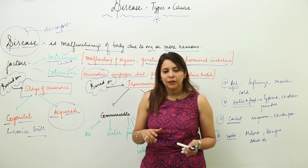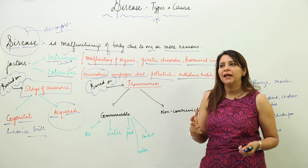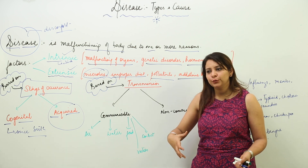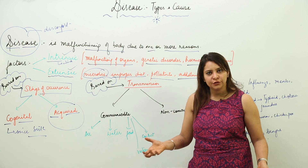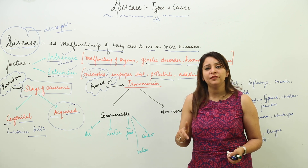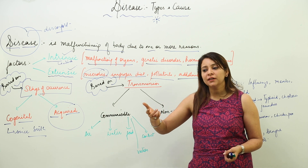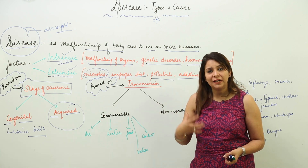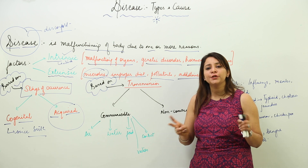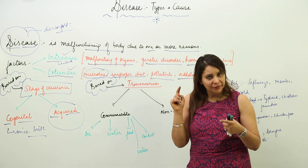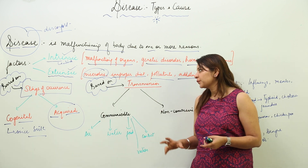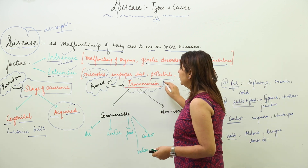Acquired disease is one that you acquire during your lifespan. For example, a person who is daily exposed to a lot of air pollution may develop a respiratory disorder and eventually suffer from tuberculosis. That disease was not present when he was born — he acquired it during his lifespan. So depending on the stage of occurrence, diseases are either congenital or acquired.